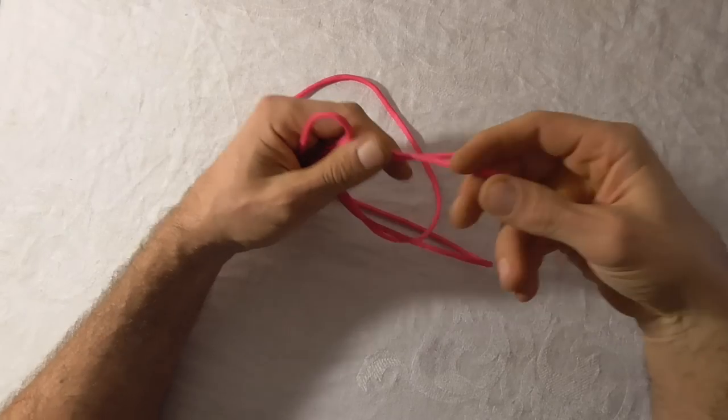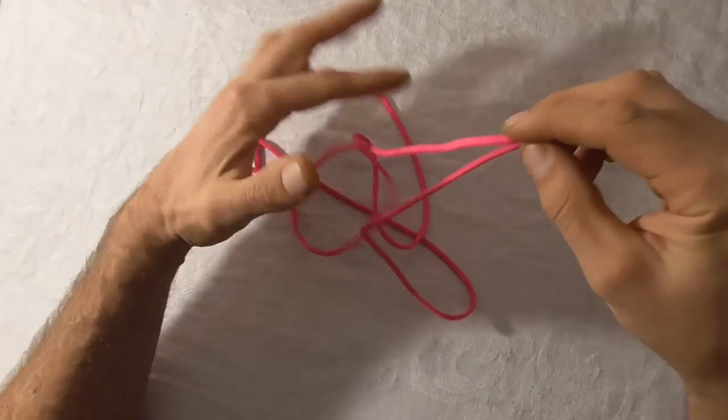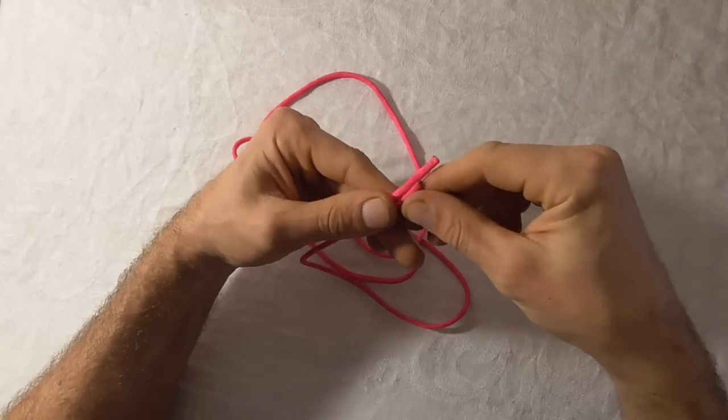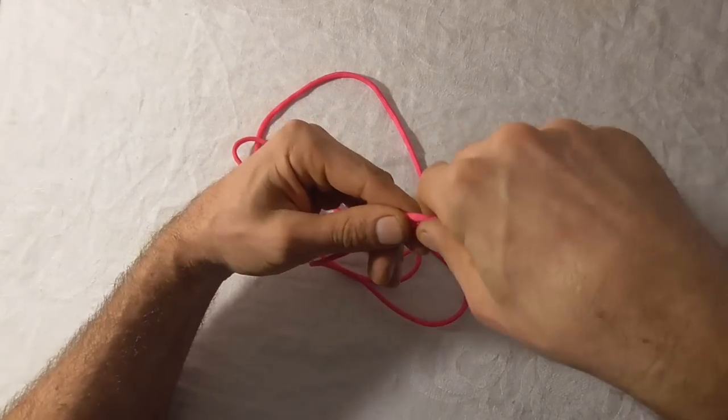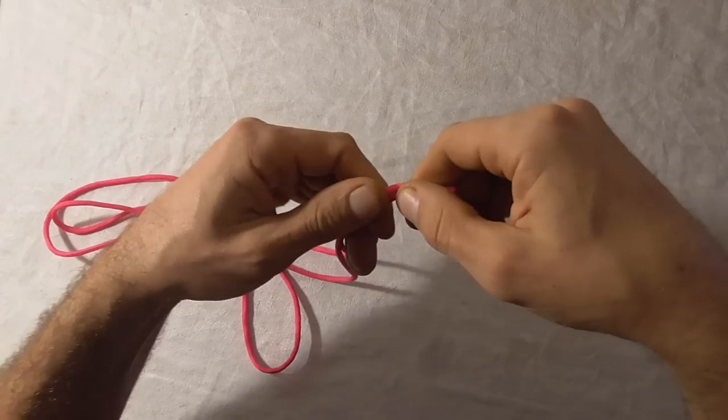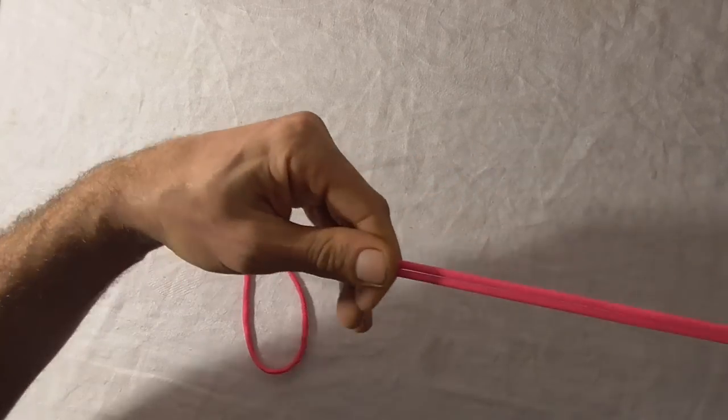So to tie this knot I want a relatively short piece of cordage because I need access to both these ends and I don't want to pull through loads of cord. So I just put the ends together and I'm going to run my hands through so I can get the center of the cord.